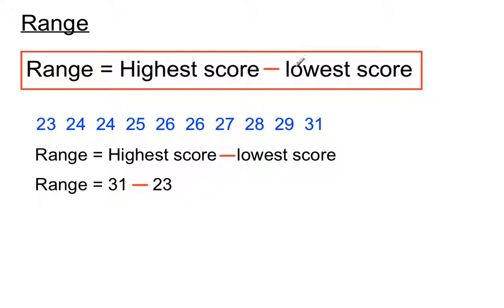So your highest score is... I think I was being kind to you by putting them in order. The highest score is 31, lowest score is 23, so the range is 31 minus 23.